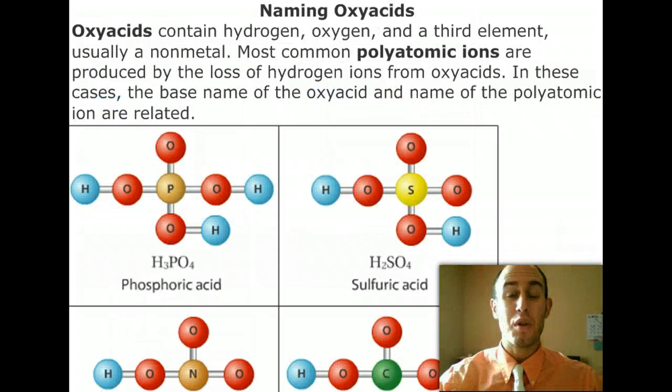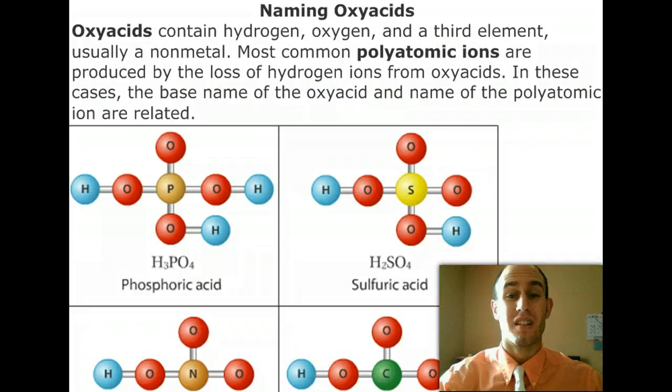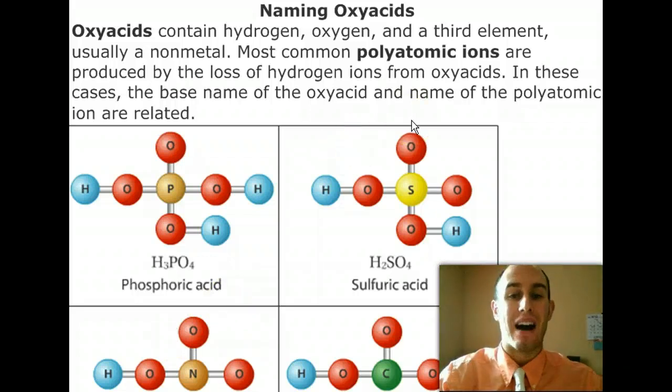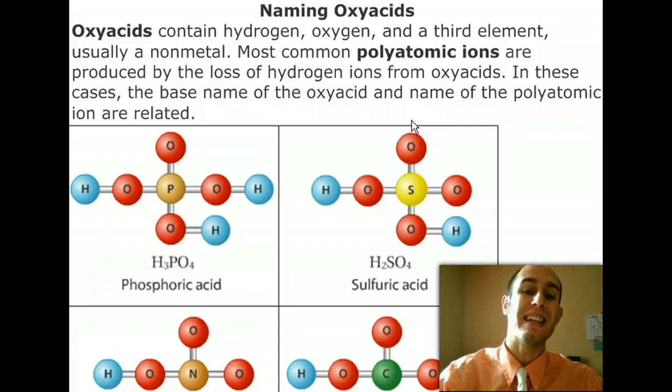Now we move on to something a little more complicated in naming oxyacids. Oxyacids are basically when we take one of our polyatomic ions and balance the polyatomic ion's charge with an equal number of hydrogens.